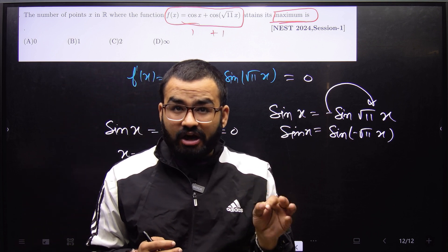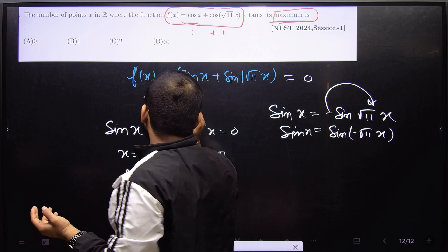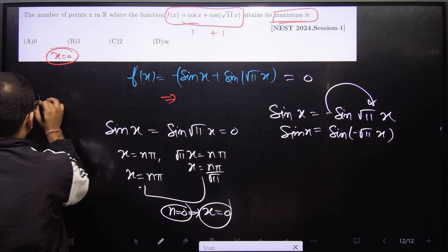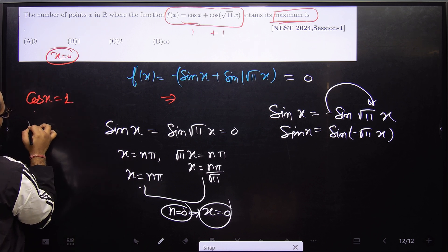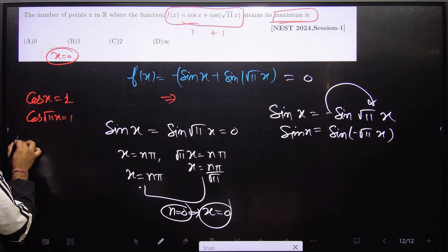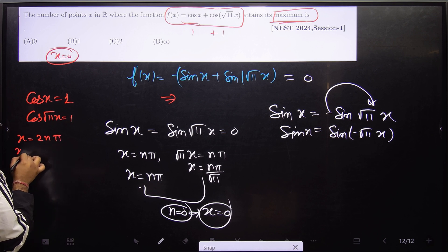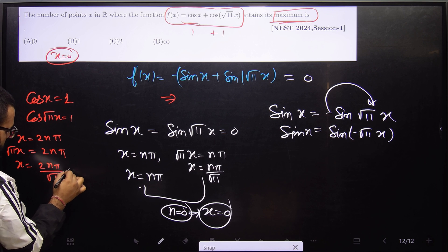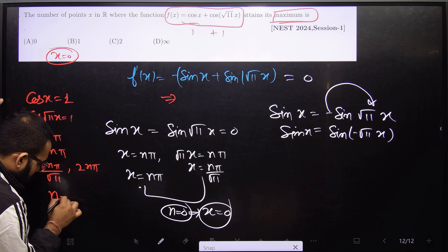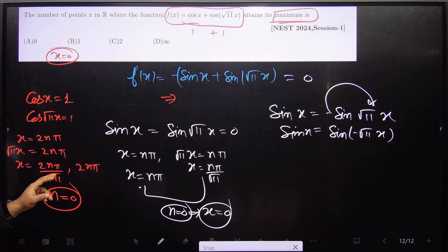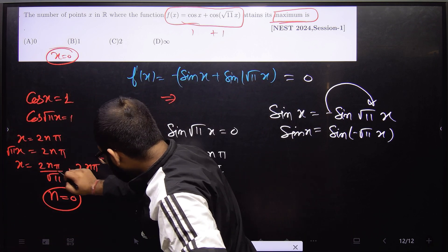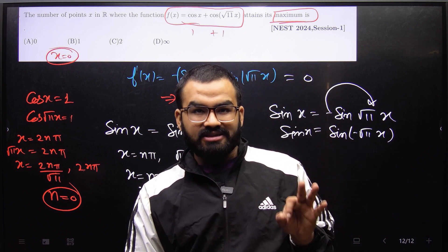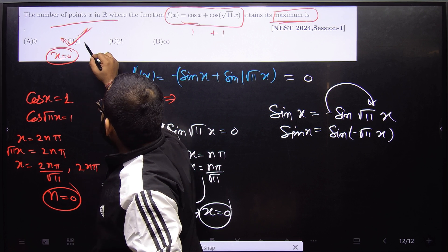But is x = 0 the only point, or are there other points? We need cos(x) = 1 and cos(√11·x) = 1 simultaneously. This gives x = 2nπ and x = 2nπ/√11. Taking the intersection, we find only n = 0, because 2nπ is rational and 2nπ/√11 is irrational — these are equal only when n = 0. So x = 0 is the only point where the function attains its maximum. The number of such points on the real number line is exactly one.